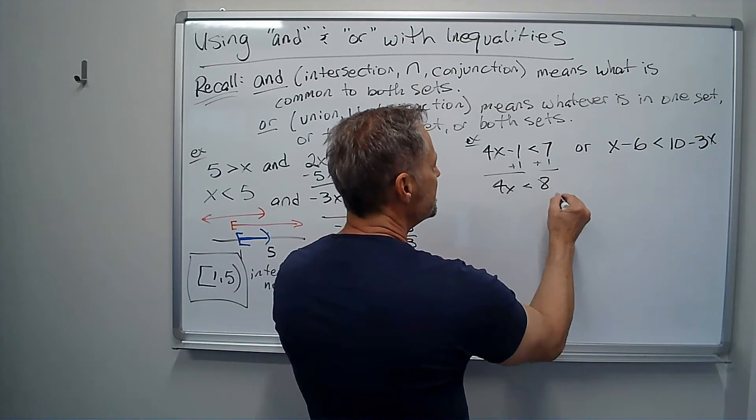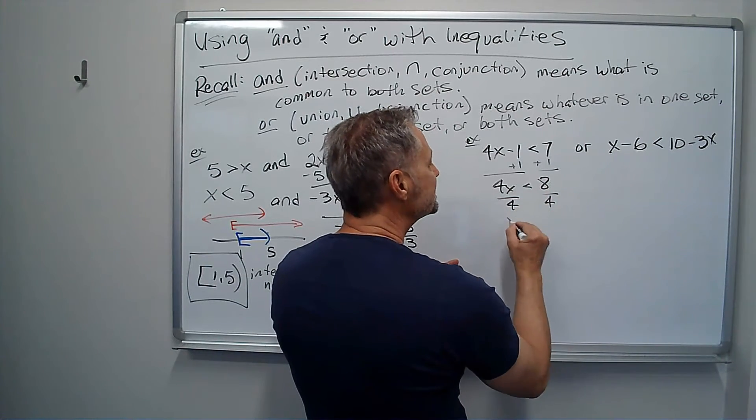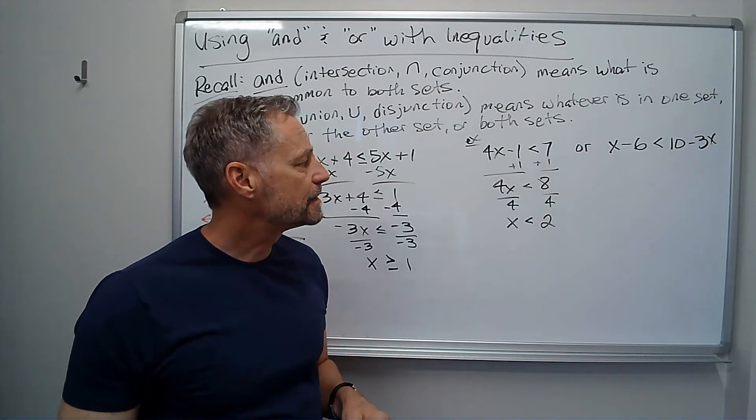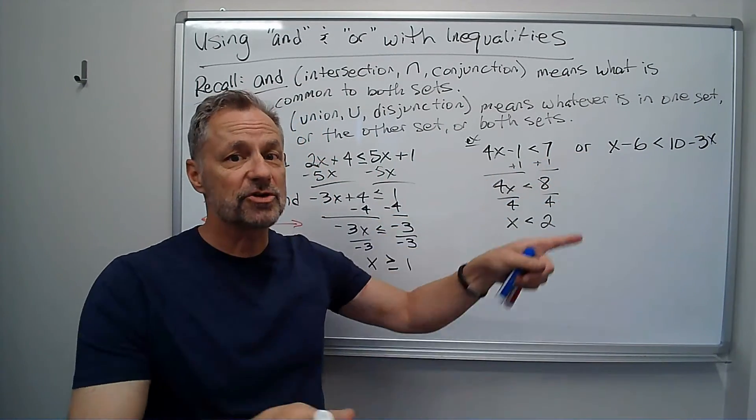4x is less than 8. Divide by 4. Since I'm dividing by a positive number, I don't have to flip the inequality.